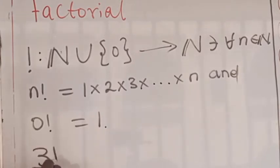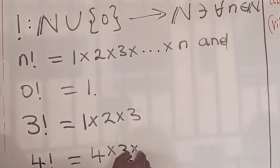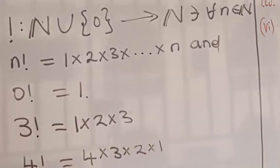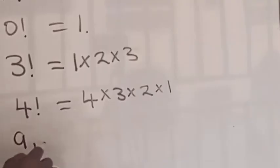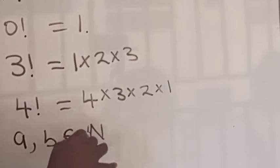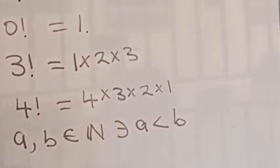So by this definition, if you give it a number like three, it gives you one times two times three. If you give it four, four factorial is equal to four times three times two times one. With this definition of factorial, we want to see that if you have any two natural numbers a and b such that a is less than b, we have that a factorial is a factor of b factorial.